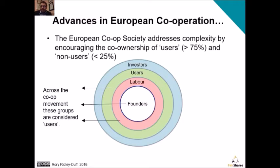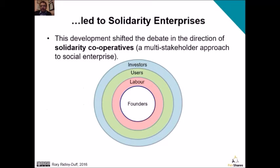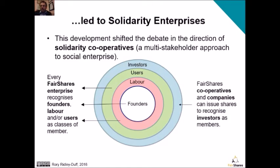Across the co-op movement, what we've been calling founders, labour and users would all be considered users in European cooperative law. A non-user is somebody who didn't found the organisation, has not provided labour, and is not a user or consumer of the goods and services. Non-users don't get more than 25% of ownership in order to prevent them blocking decisions that users want to take. This has led to the idea of a solidarity co-op, and in the UK the Fair Shares Association and others have embraced the new principles to create solidarity enterprises. Every Fair Shares enterprise recognises founders, labour and users as classes of member, and if constituted as a cooperative or company, can also issue shares to recognise them as investors.